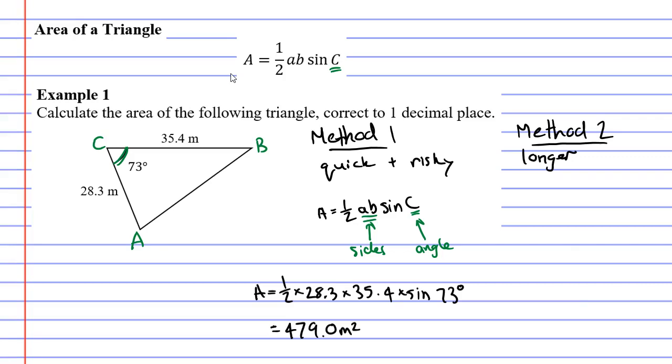After doing that we need to label our lowercase letters. Opposite capital C is lowercase c. Opposite capital B is lowercase b. And opposite capital A is lowercase a.